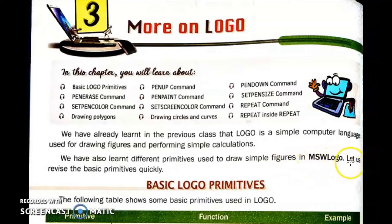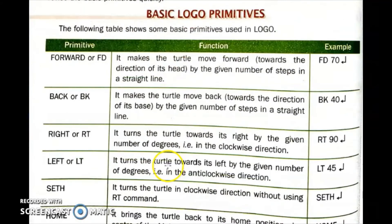Let's revise the basic primitives quickly. The first is the Forward command, written as FD. It makes the turtle move forward towards the direction of its head by the given number of steps in a straight line. The FD command moves the Logo turtle in the direction its head is facing when we input a number with the command.